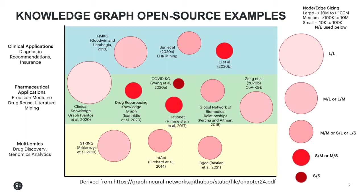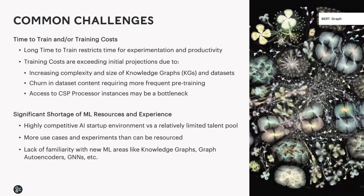Just to take a step back, we've touched on clear trends in terms of model architectures that span the healthcare use case space in the form of transformers and graph neural networks. As part of addressing the machine learning needs in this marketplace, Graphcore has been working to identify some key problem statements. There are two key challenges confirmed through interviews with customers. First, around time to train and training costs, which are related — the longer time to train with transformer and GNN models is restricting experimentation time and lowering overall team productivity, potentially blocking areas of research. Training costs are also exceeding initial projections due to increasing complexity of models, size of datasets, and complexity of knowledge graphs.